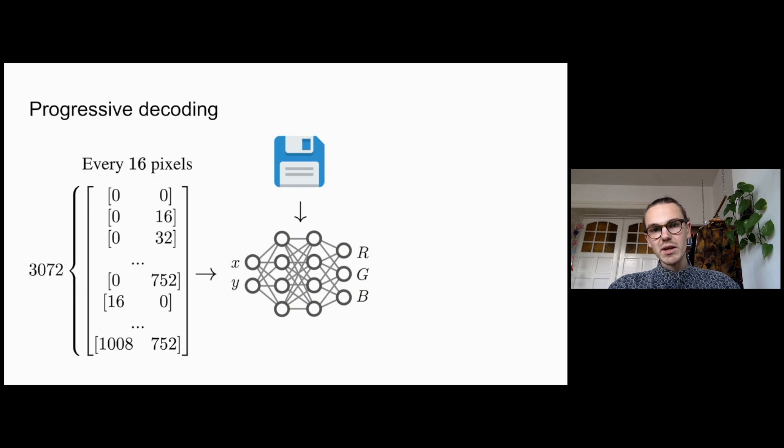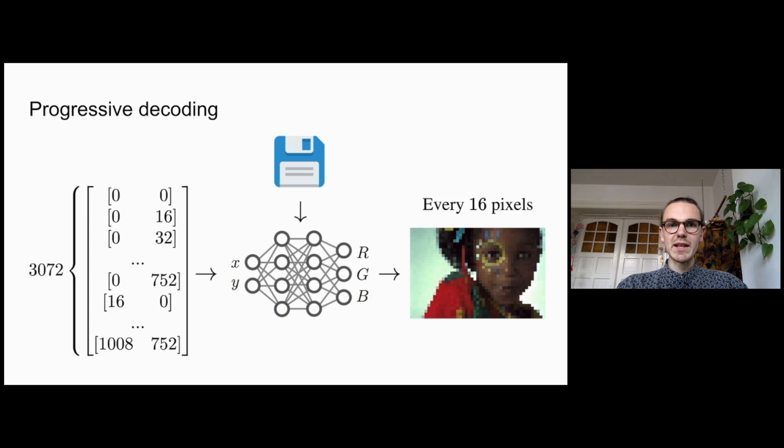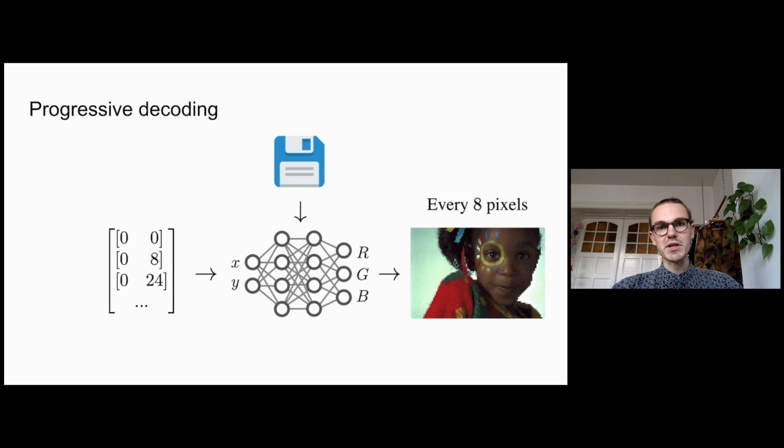Instead of decoding pixels one by one in the raster scan order, we can first decode a lower resolution image, thus providing a more responsive experience to the user. Let's say that first we decode only every 16th pixel in the image. This yields a much smaller number of required function evaluations and allows us to obtain a low-resolution version of the image almost immediately that we can display to the user, hence providing a responsive experience.